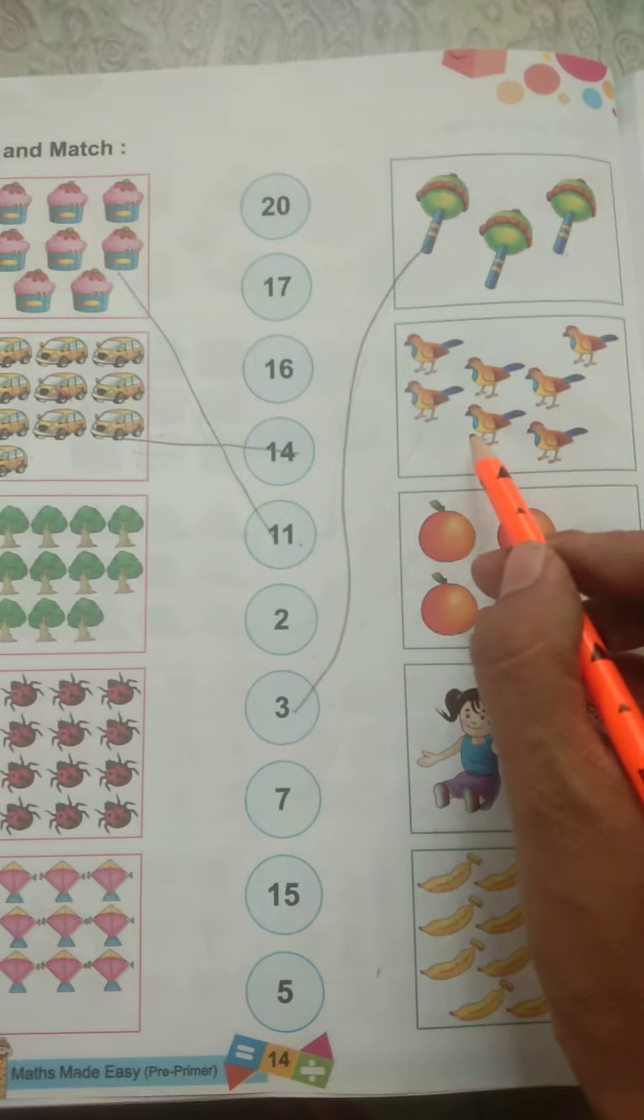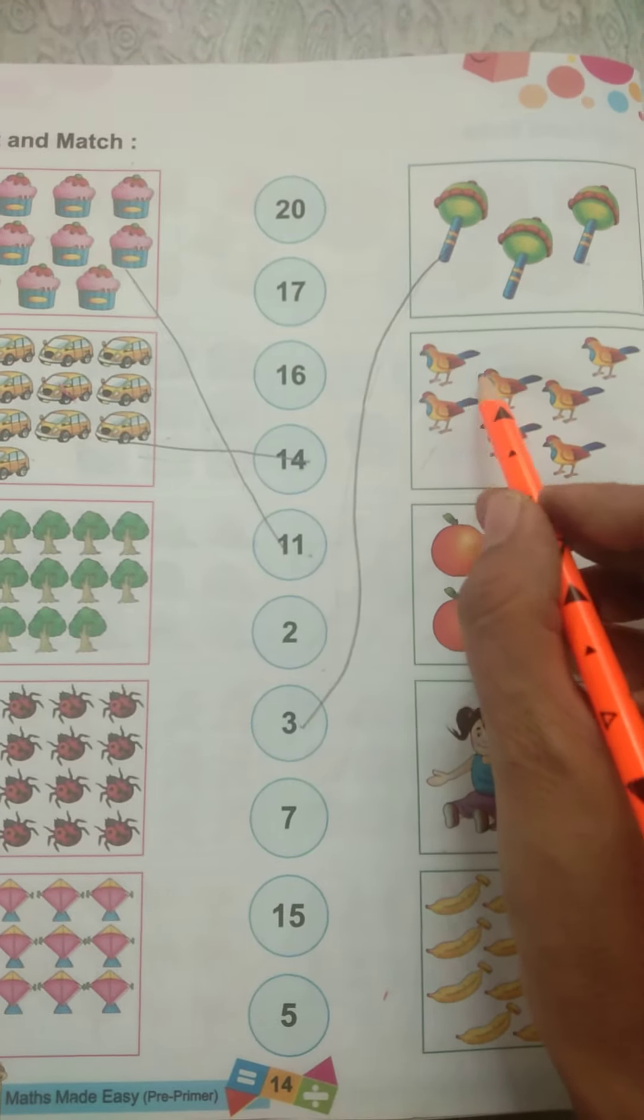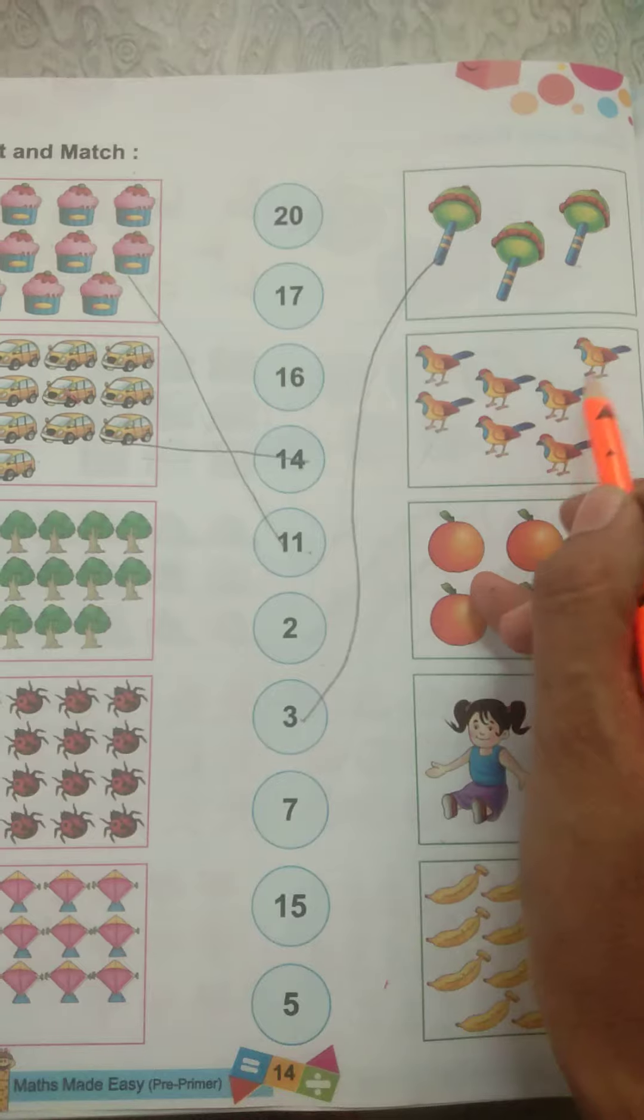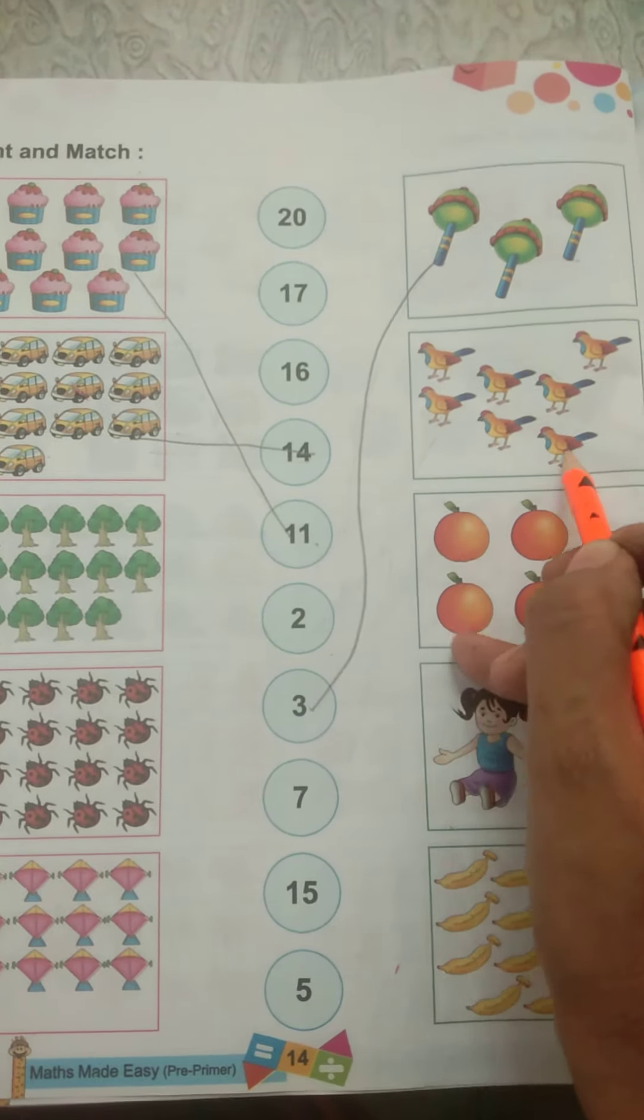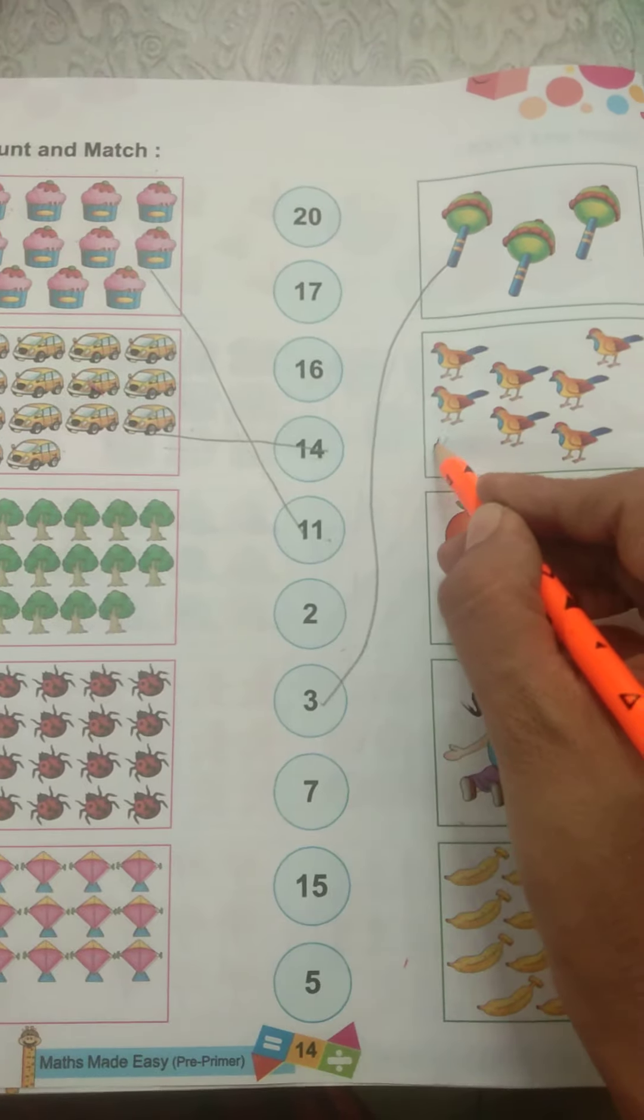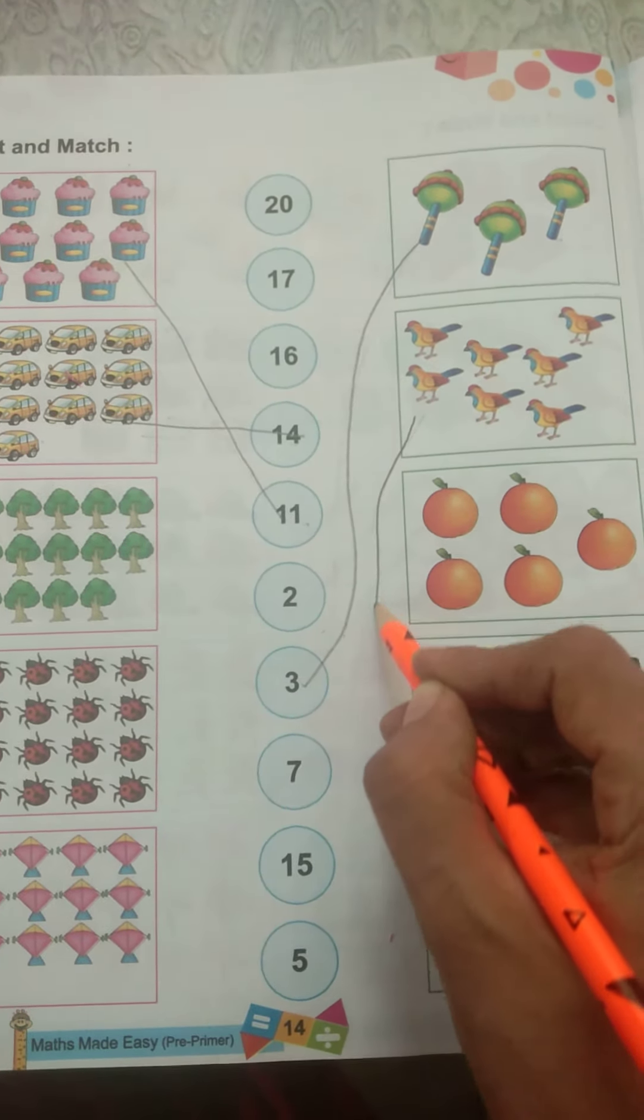How many sparrows? 1, 2, 3, 4, 5, 6, 7. Here is 7.